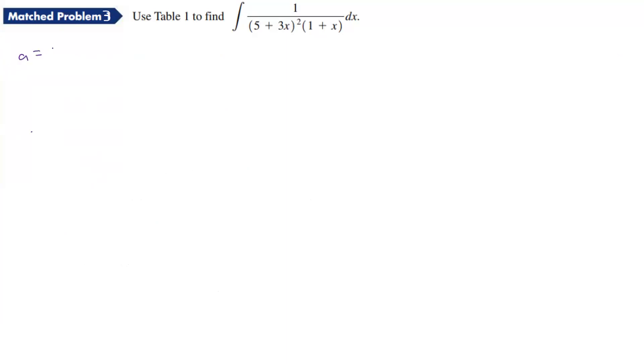So A, in this case, is 5, B is equal to 3, C equals 1, and D is equal to 1.